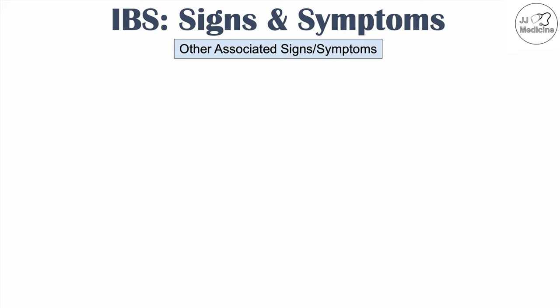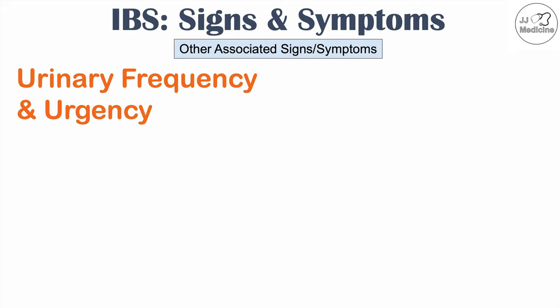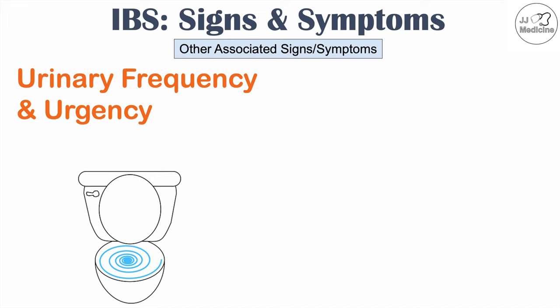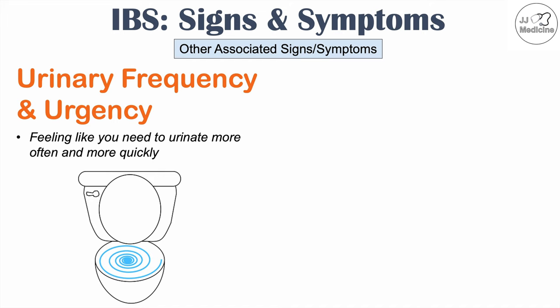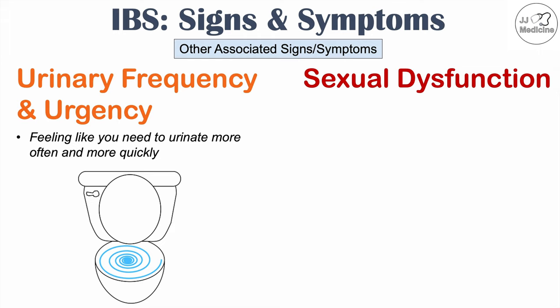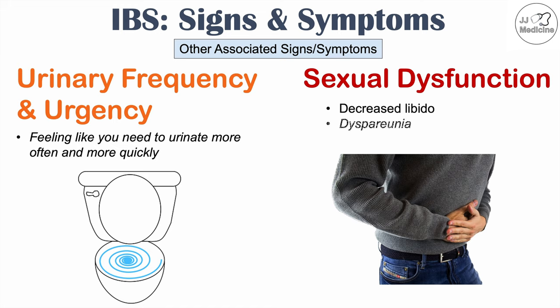Some other relatively uncommon symptoms have been noted in epidemiological studies. Patients with IBS are more likely to report issues with urinary frequency and urgency — feeling the need to urinate more often and more quickly. They are also more likely to report sexual dysfunction, manifesting as decreased libido and dyspareunia. These are associated signs and symptoms not necessarily causally connected with the underlying pathogenesis of IBS, but they are reported in IBS patients more often.